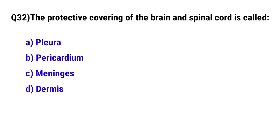Question No. 32: The protective covering of the brain and spinal cord is called? The correct option is C: Meninges.